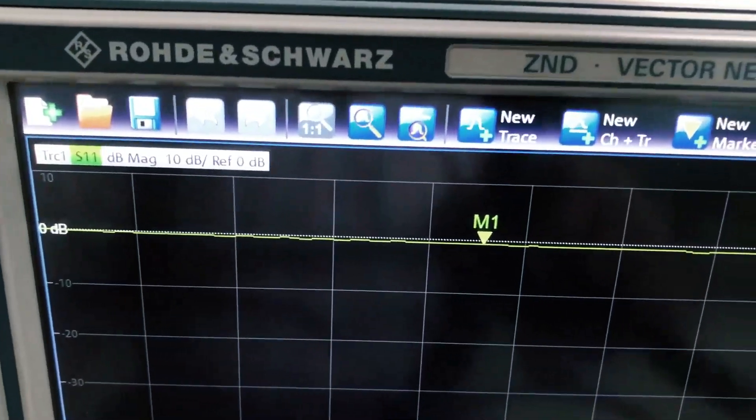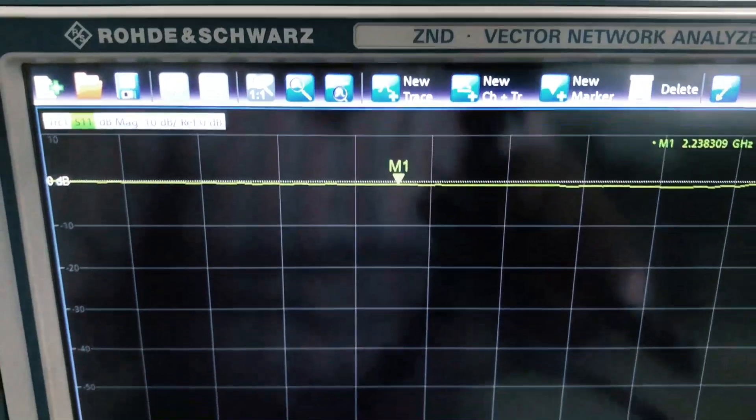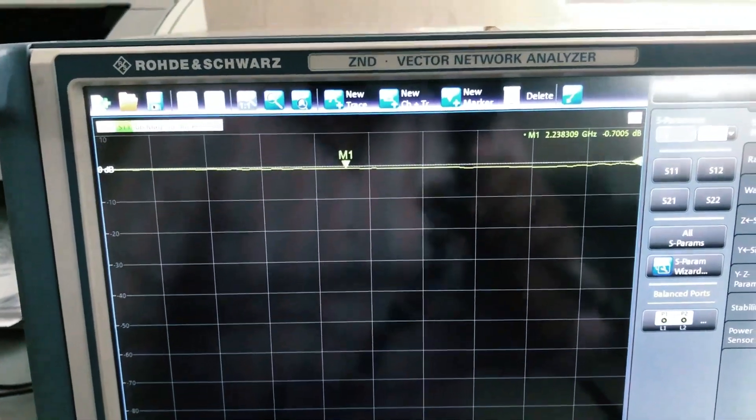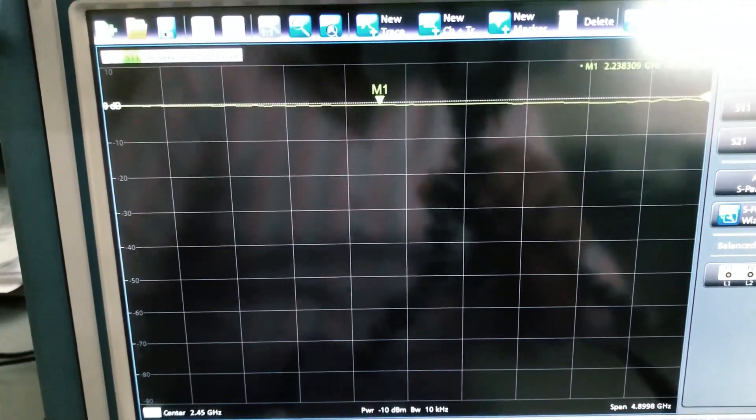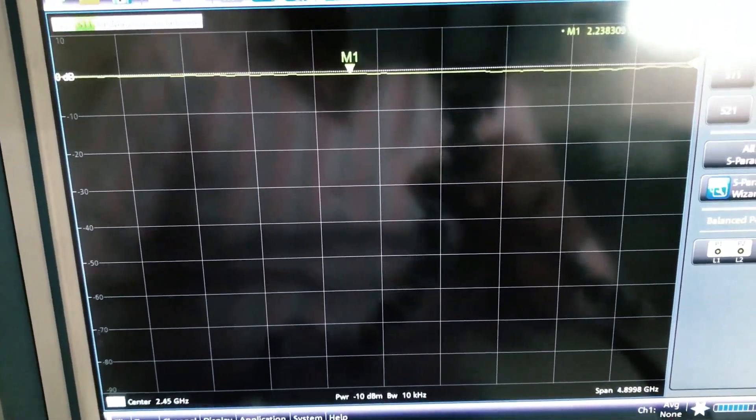This vector network analyzer that I have is Rohde & Schwarz ZND vector network analyzer. This thing has a frequency range from I think 150 kHz all the way up to 8.5 GHz.